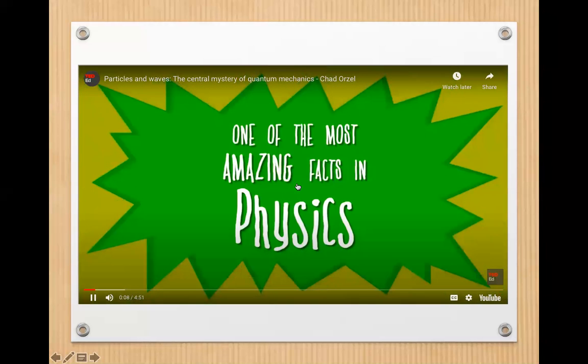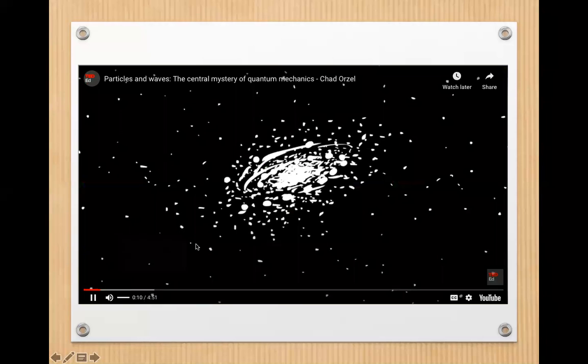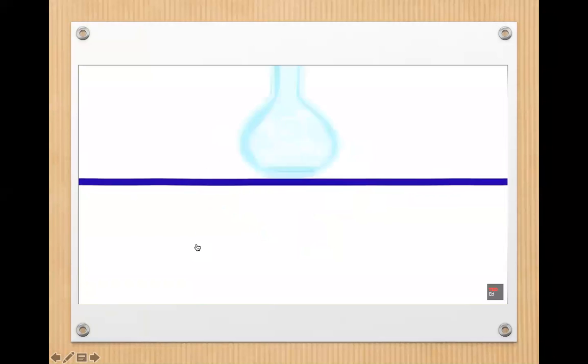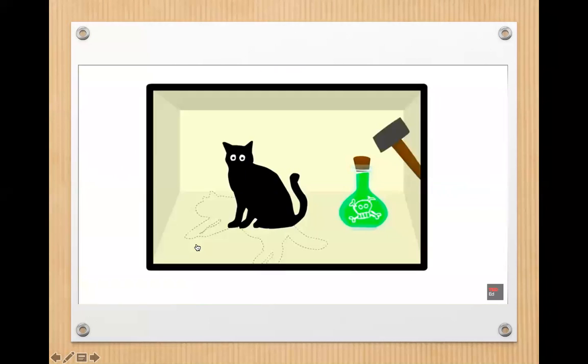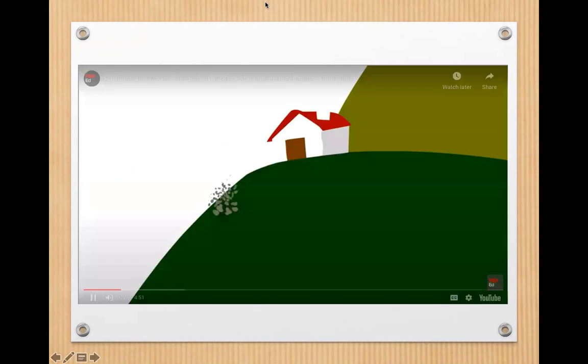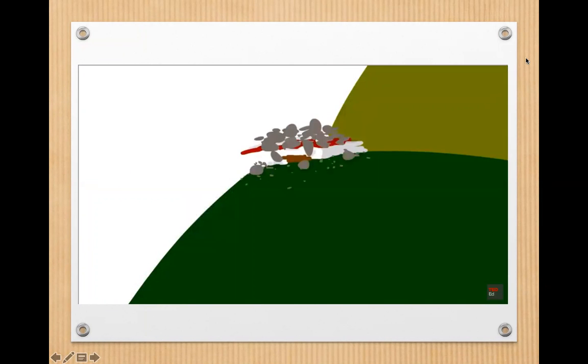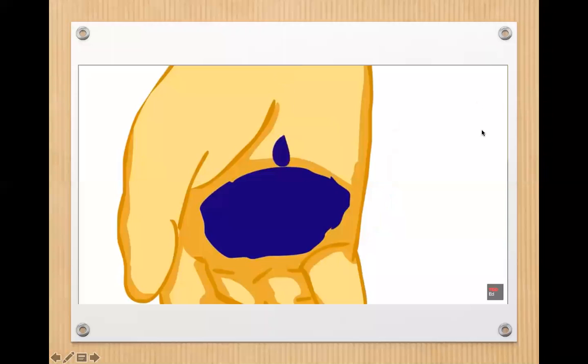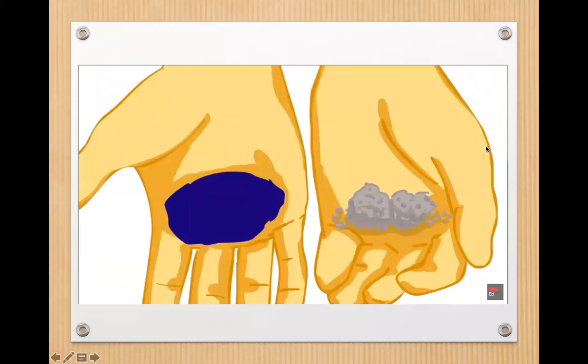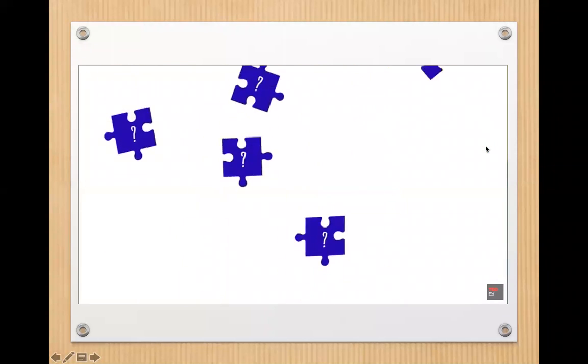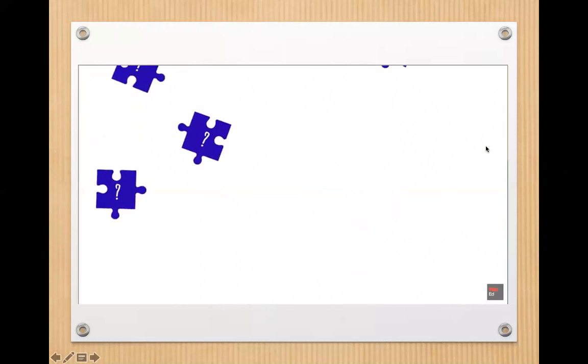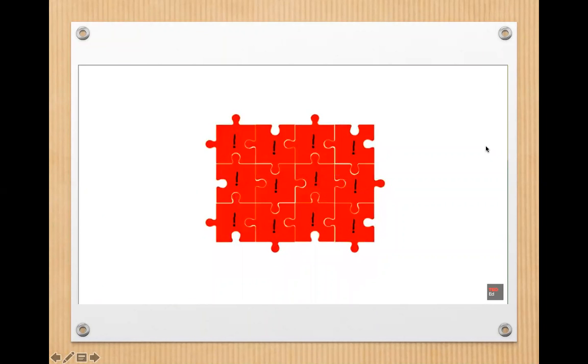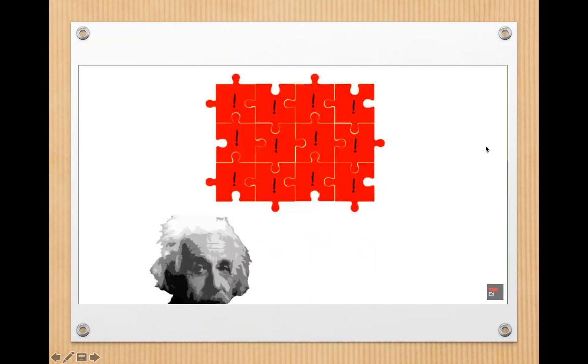One of the most amazing facts in physics is this: everything in the universe, from light to electrons to atoms, behaves like both a particle and a wave at the same time. All of the other weird stuff you might have heard about quantum physics—Schrodinger's cat, God playing dice, spooky action at a distance—all of it follows directly from the fact that everything has both particle and wave nature. This might sound crazy. If you look around, you'll see waves in water and particles of rock, and they're nothing alike.